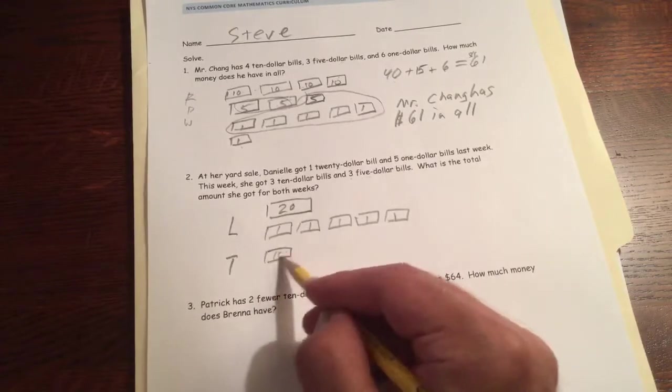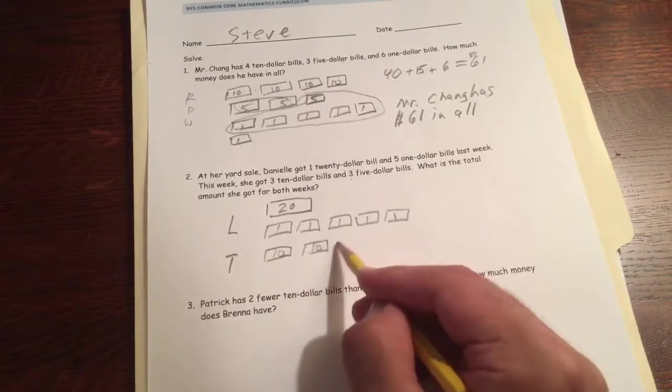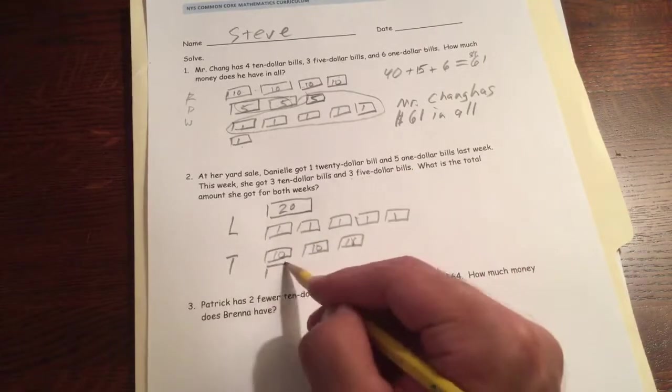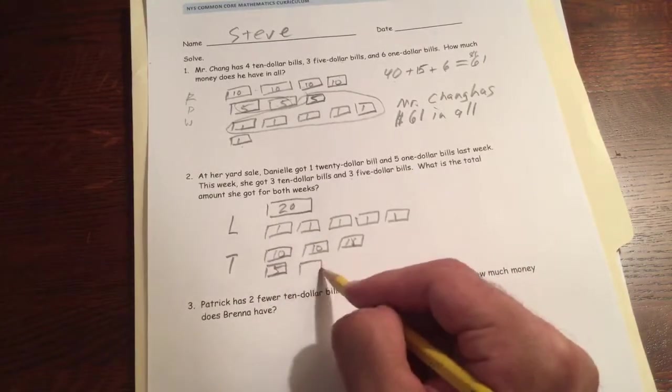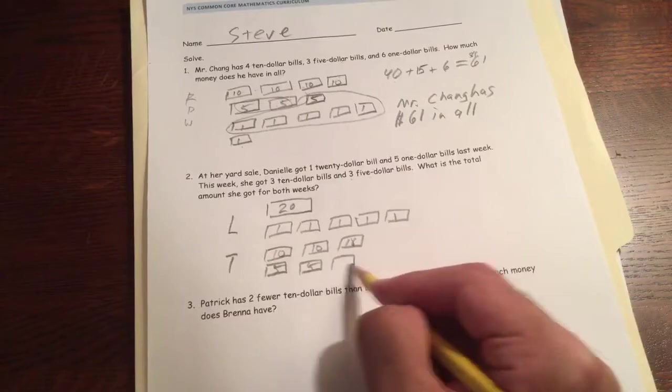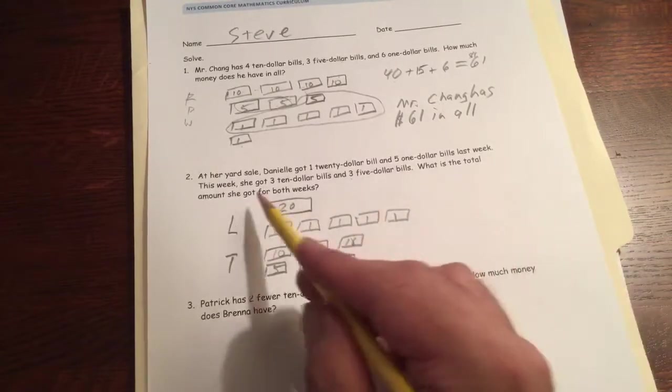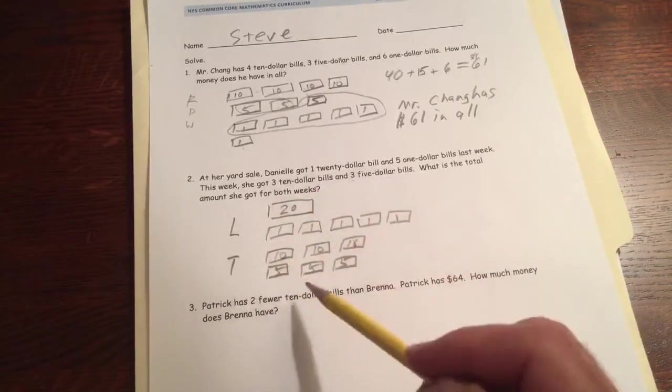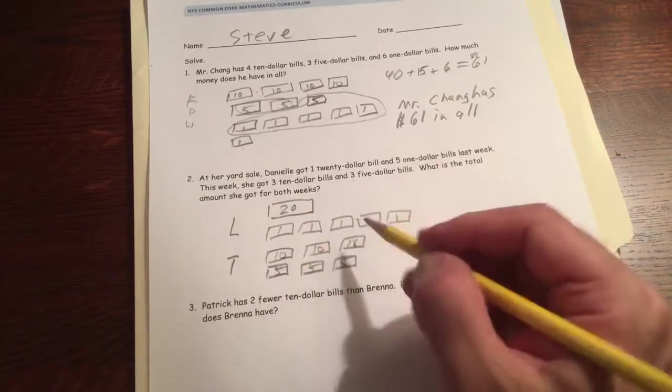So three tens, one, two, three, and three fives, five, five, five. What's the total amount she got for both weeks? So for both weeks, we're just going to count all of it. We could just count it. We just drew it. We could use the picture.